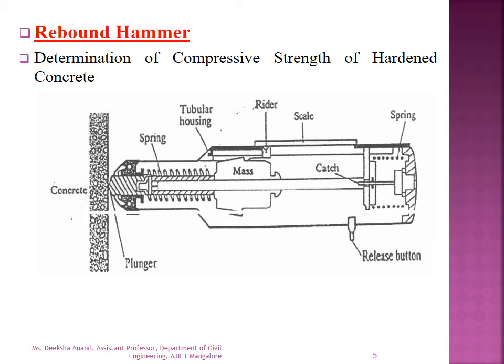The rebound hammer test is used to determine the compressive strength of hardened concrete. The equipment consists of a hammer in contact with the concrete surface, a plunger (also known as a needle), a spring to give the to-and-fro movement, a tubular housing, a rider scale, and a release button at the back.